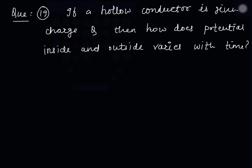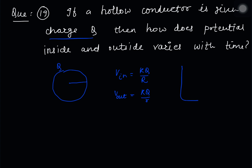In this question, there is a hollow conducting sphere with charge q. Inside the sphere the potential is constant and equal to kq/R, where R is the radius. Outside the sphere the potential follows the point charge formula. This gives a characteristic curve for the potential as a function of distance.